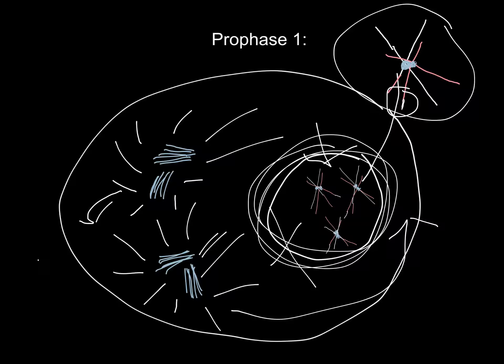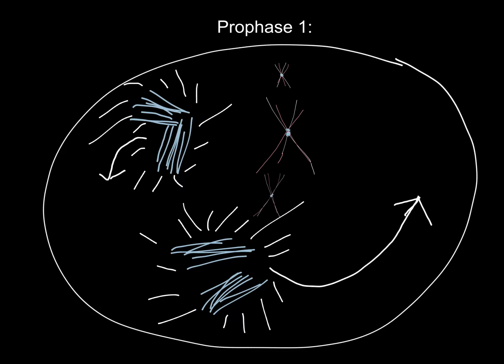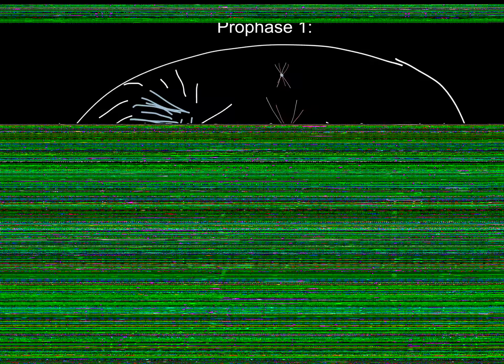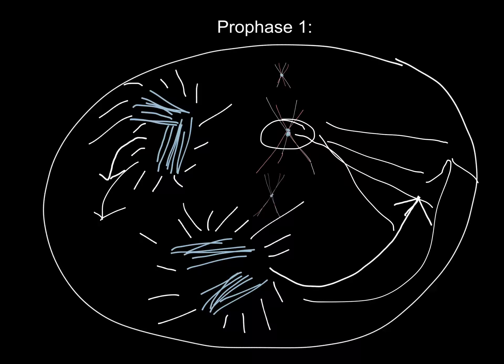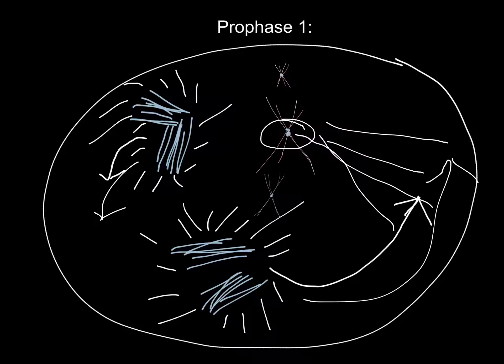Chiasma is crossing over. In metaphase one, the meiosis spindle is fully formed and the duplicated pairs of centrioles are in place, here and at the opposite pole. They extend the meiosis spindle to the centromere, connecting to the kinetochore right here, and then the sister chromatids will attach with their kinetochores.